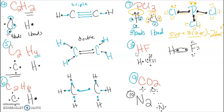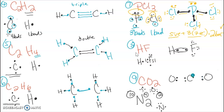Our last molecule is CO₂ — carbon and oxygen. Carbon forms four bonds, oxygen forms two bonds. Whichever forms more bonds is the central atom, so we put carbon in the middle with oxygen on the outside. Oxygen wants two bonds so it shares two; carbon wants four so it shares two to each oxygen. We get four bonds for carbon and two for each oxygen — forming two double bonds.